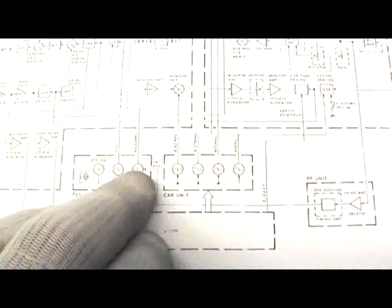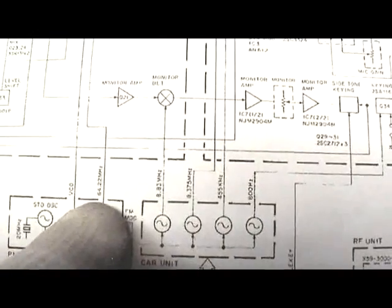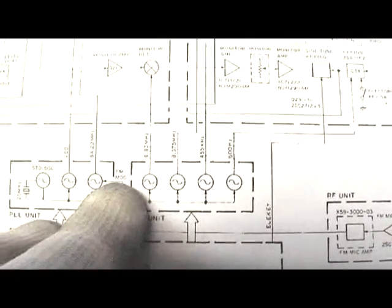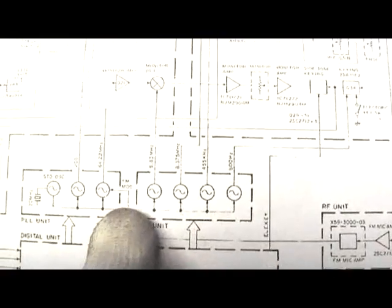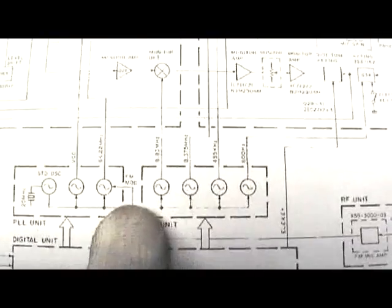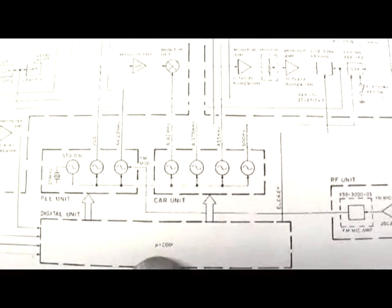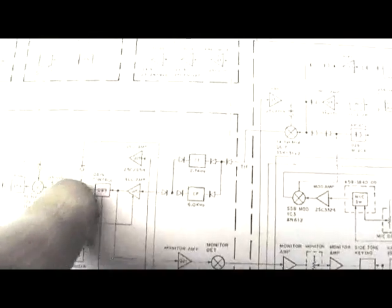We've got a 64.2200 MHz reference — it's a local oscillator. If you look here, the FM modulation swings, and that's the PLL unit — it swings the VCO basically, and that's what gives us the deviation.